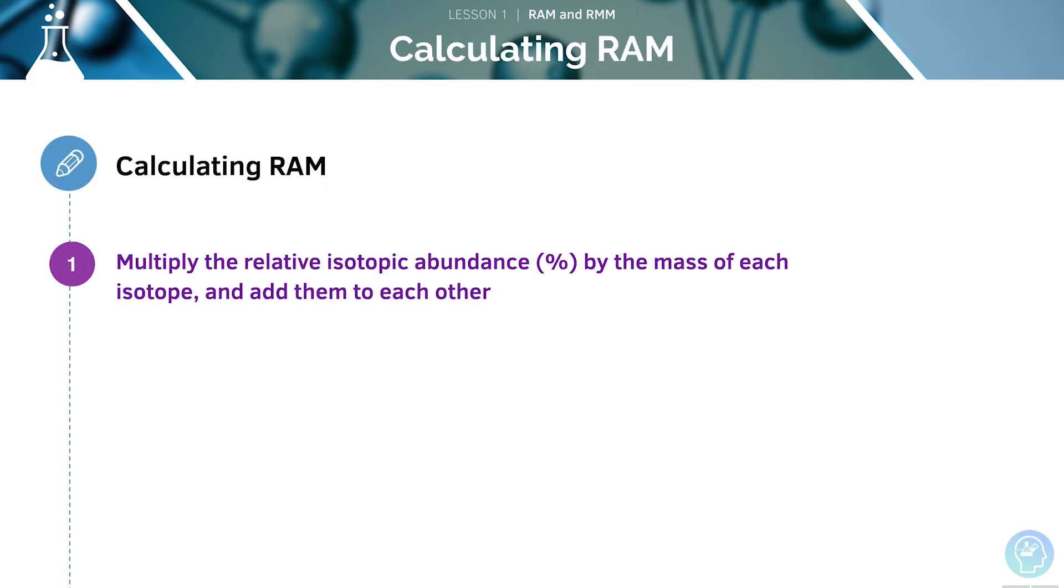Let's look at how to calculate the relative atomic mass of an element step by step. The first step is to multiply the relative isotopic abundance by the mass of each isotope and add them to each other. We then have to divide by 100 and do a sense check. This is so we can make sure that the value seems right.